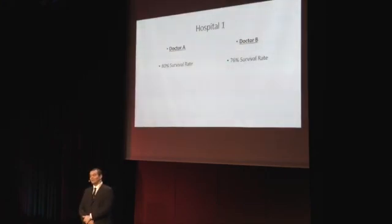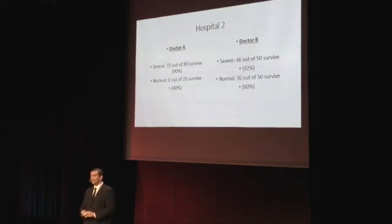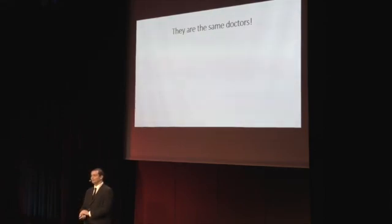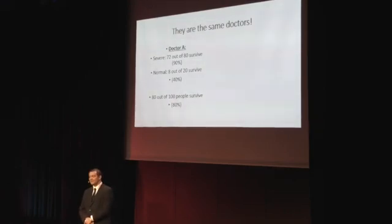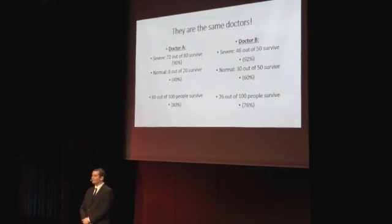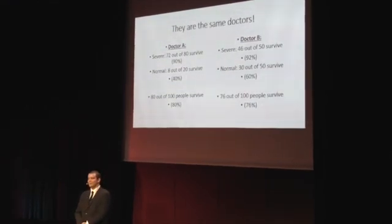So, to repeat: in the first hospital, you'd prefer Dr. A; in the second hospital, you'd prefer Dr. B. The problem being — they're the same doctors. This is Dr. A in the first hospital and in the second hospital. I can either split his cases — the normal and the severe — or I can just add them up and get an 80% rate. The second doctor, the same thing. Although he's better in both categories independently, overall his percentage is worse. What you've just experienced is called Simpson's Paradox, which means that depending on how I split up data presented to you, I can get two opposite decisions from you.